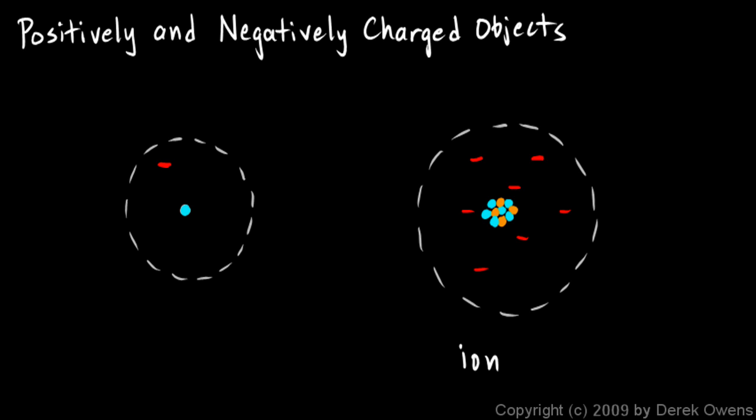So it's these outer electrons that can be rubbed off and can be caused to move from one atom to another. So in general, objects are charged by gaining excess electrons, in which case they become negatively charged.